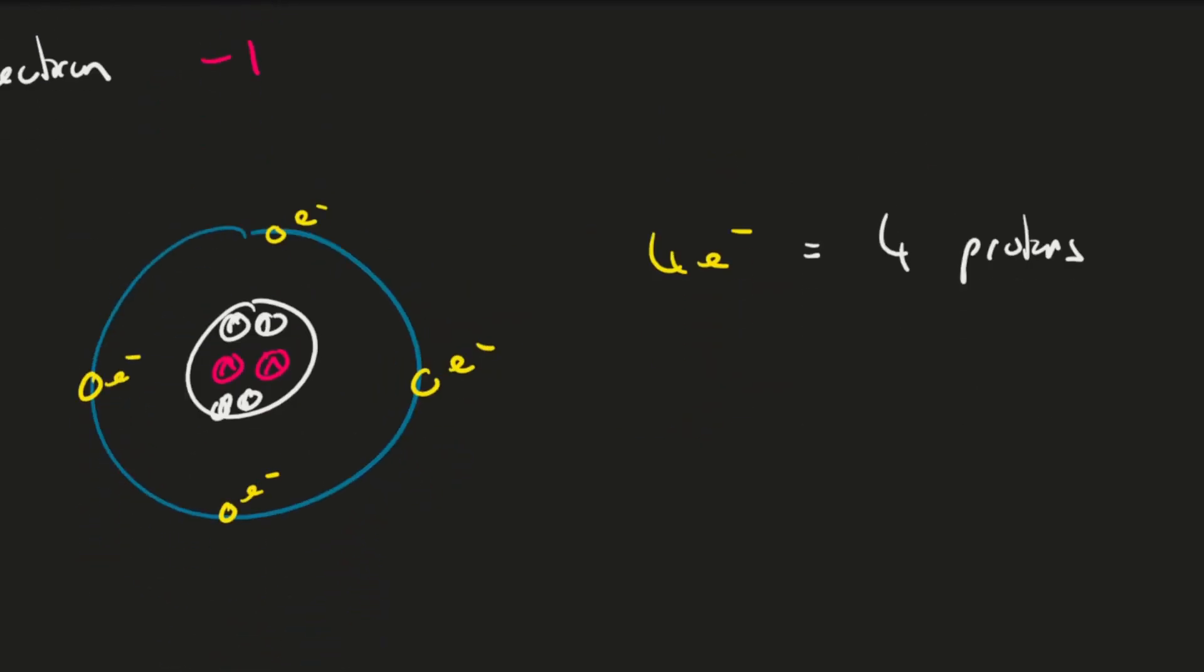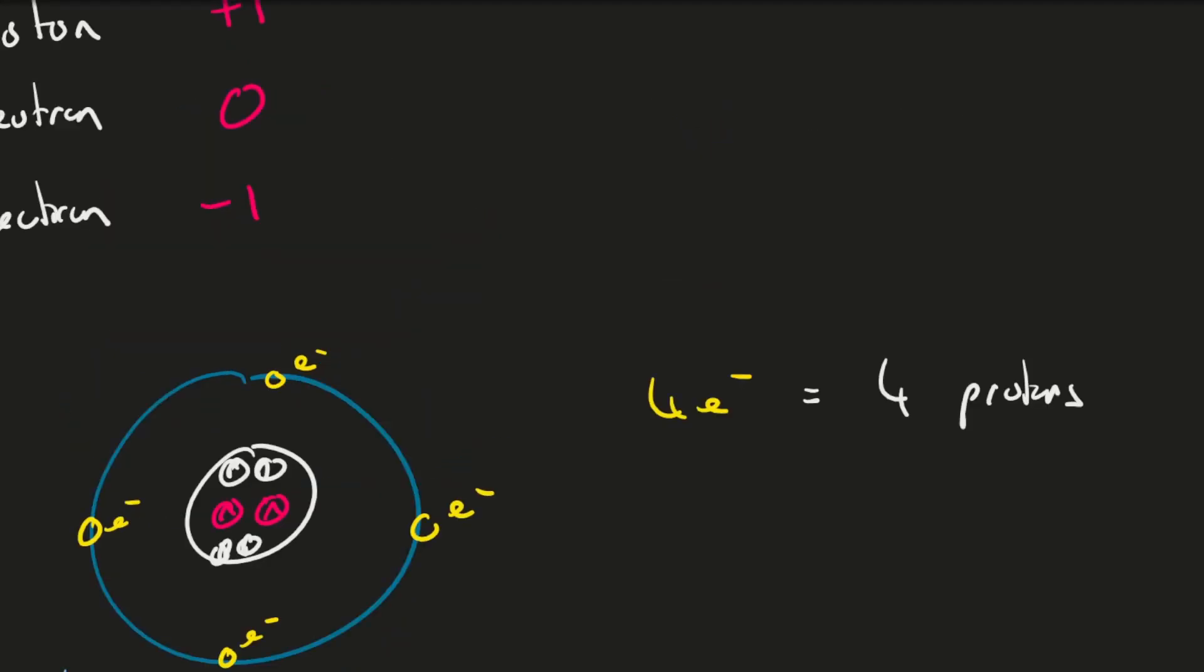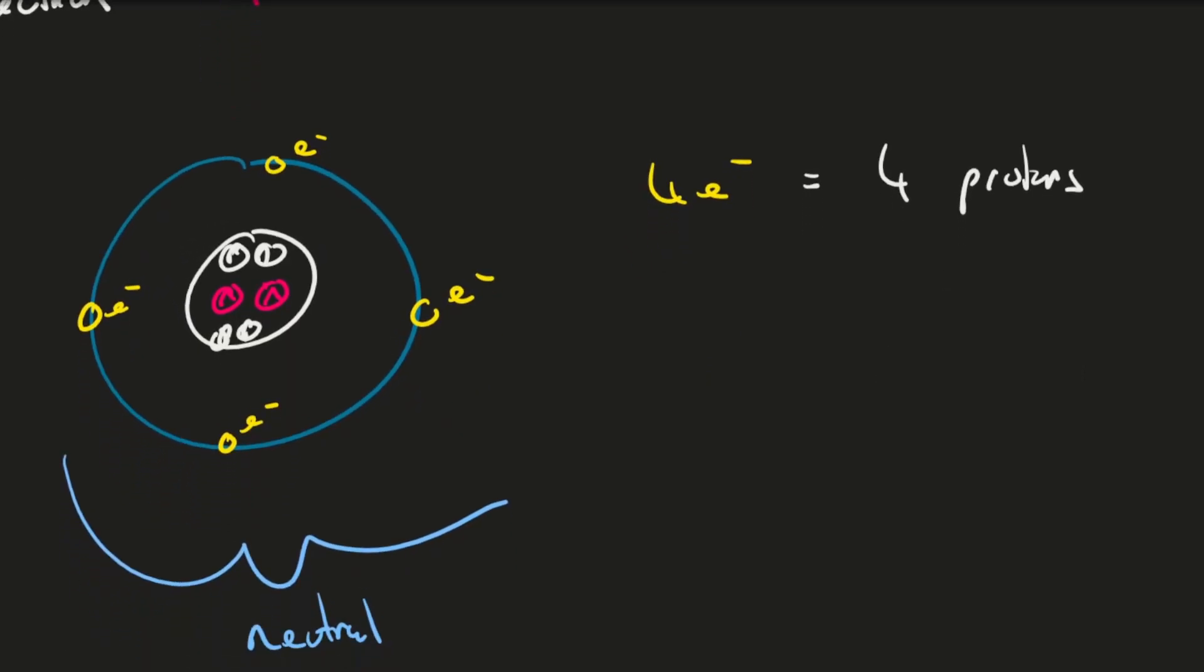Now that we've introduced protons, we can develop our idea of elements a bit further. Before, we said that different elements occur when you have different types of atoms. Actually, what changes from atom to atom to cause a new element is the number of protons.